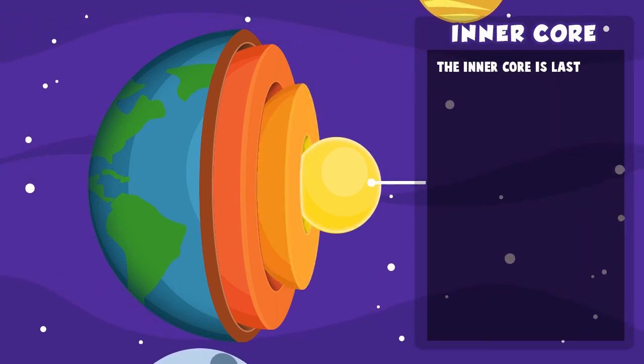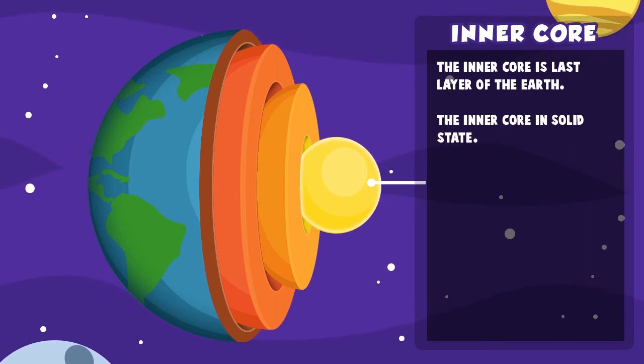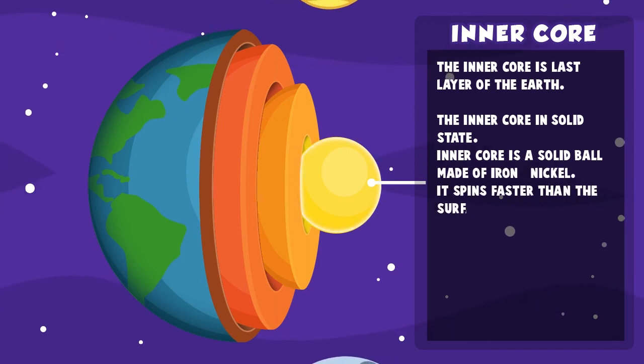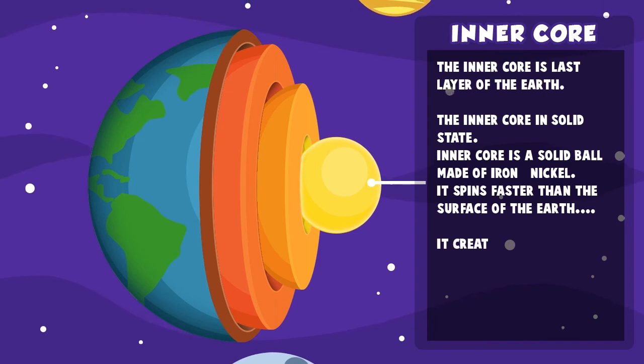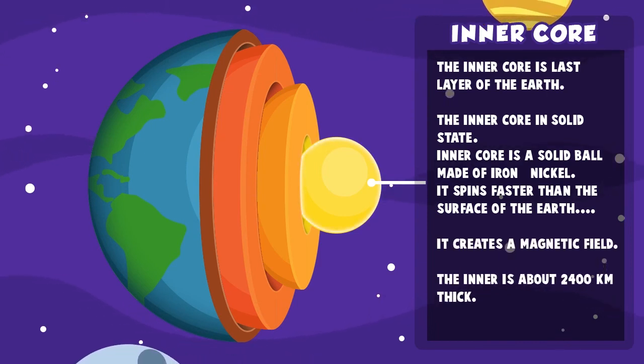Inner core. The inner core is the last layer of the Earth. The inner core is in a solid state - a solid ball made up of iron and nickel. It spins faster than the surface of the Earth and creates a magnetic field. The inner core is about 2,400 km thick.